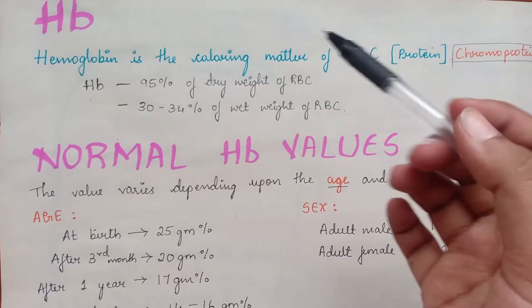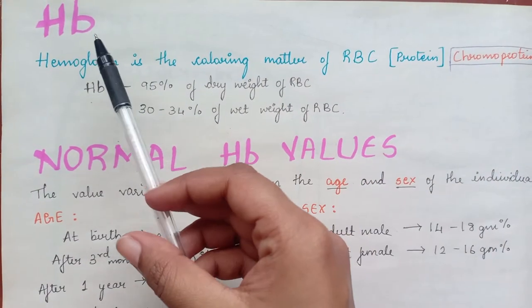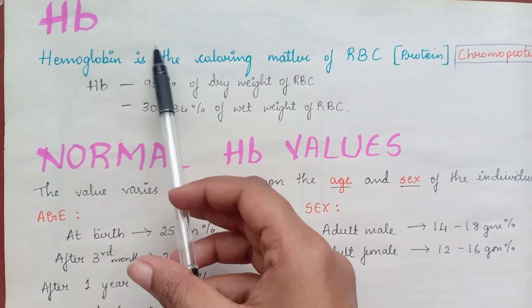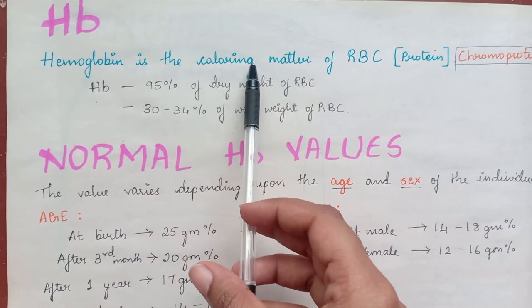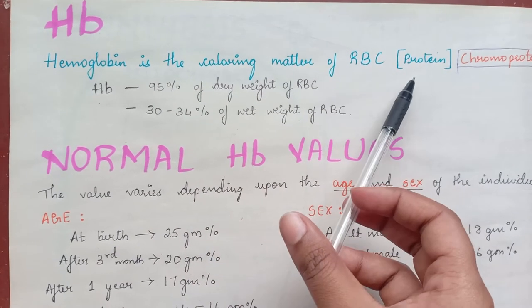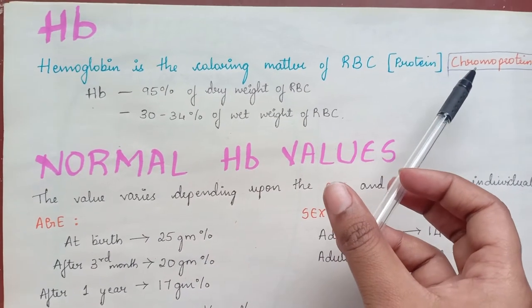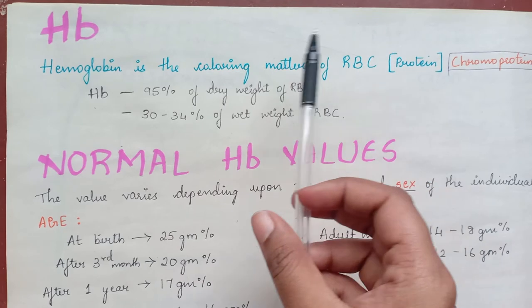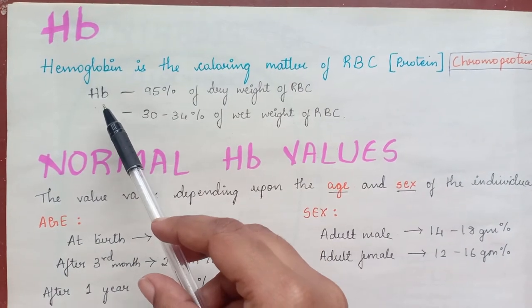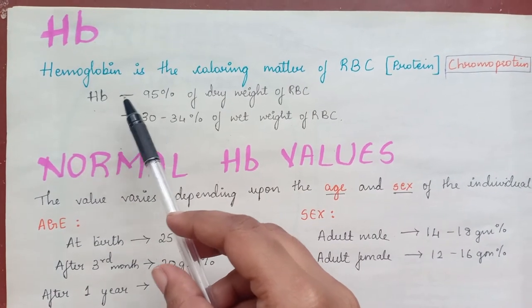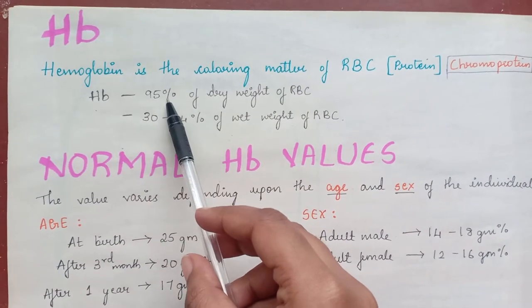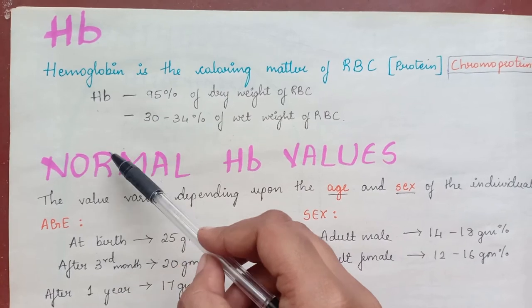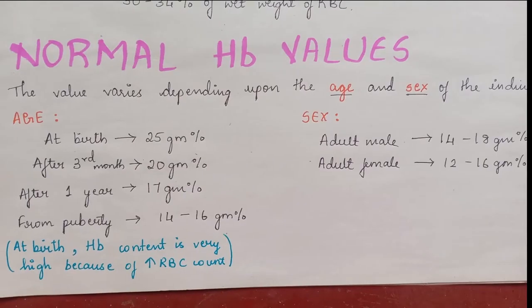Hemoglobin is the coloring matter of RBC, which is also a protein called chromoprotein because of its color. It forms 95% of the dry weight of RBC and 30–34% of the wet weight.